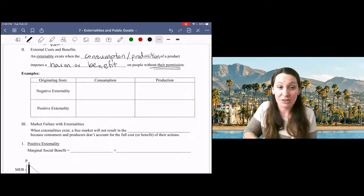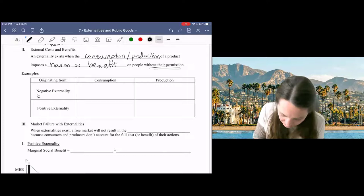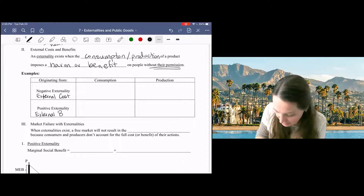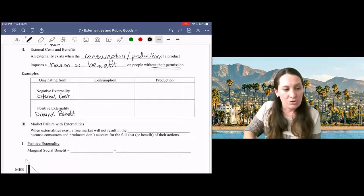Negative externality is another way of saying these external costs or harms. And positive externality is another way of saying external benefit, a benefit outside of the market. Those terms can be used interchangeably.